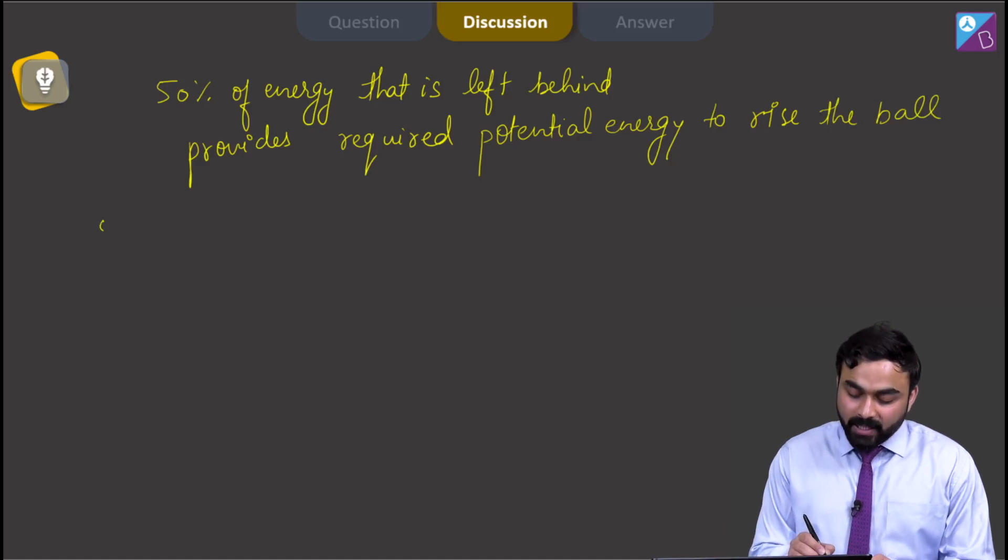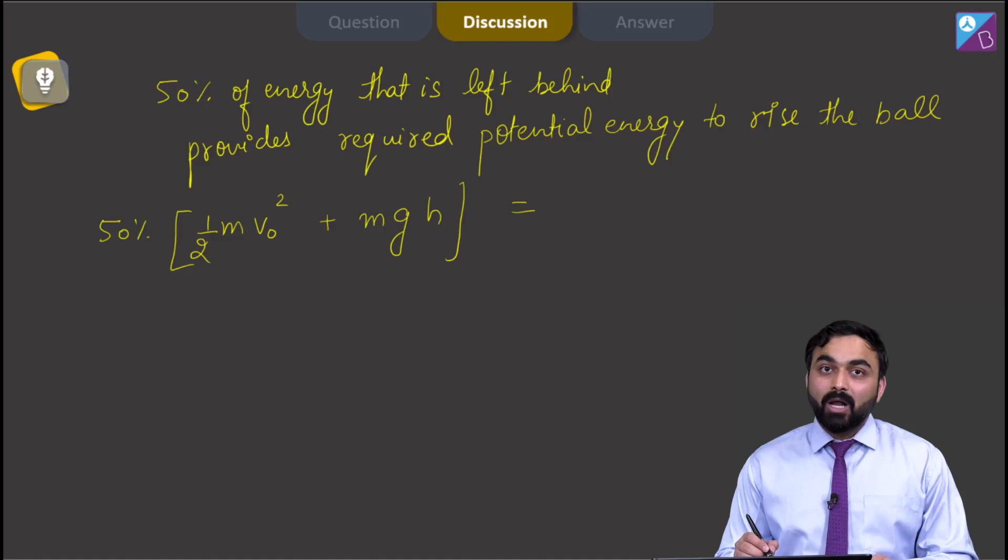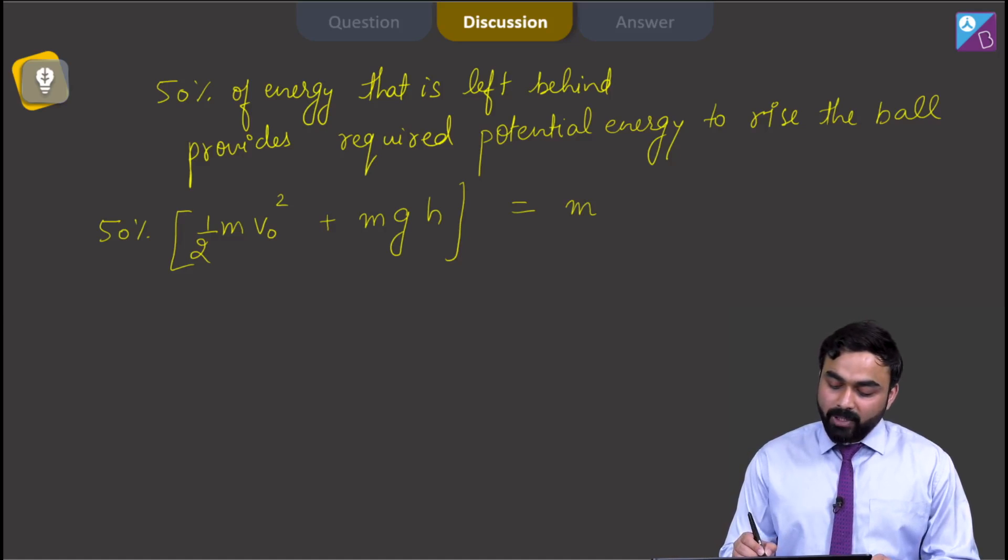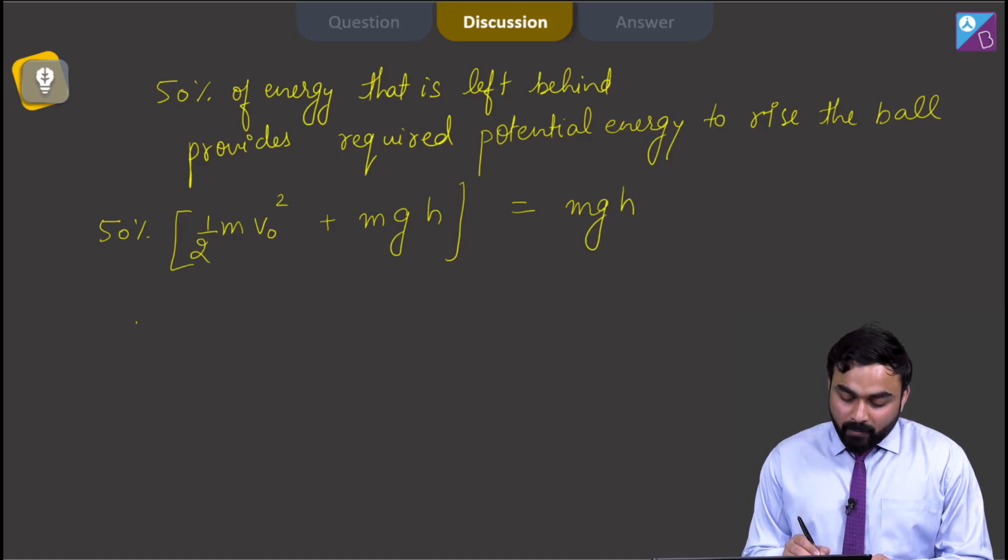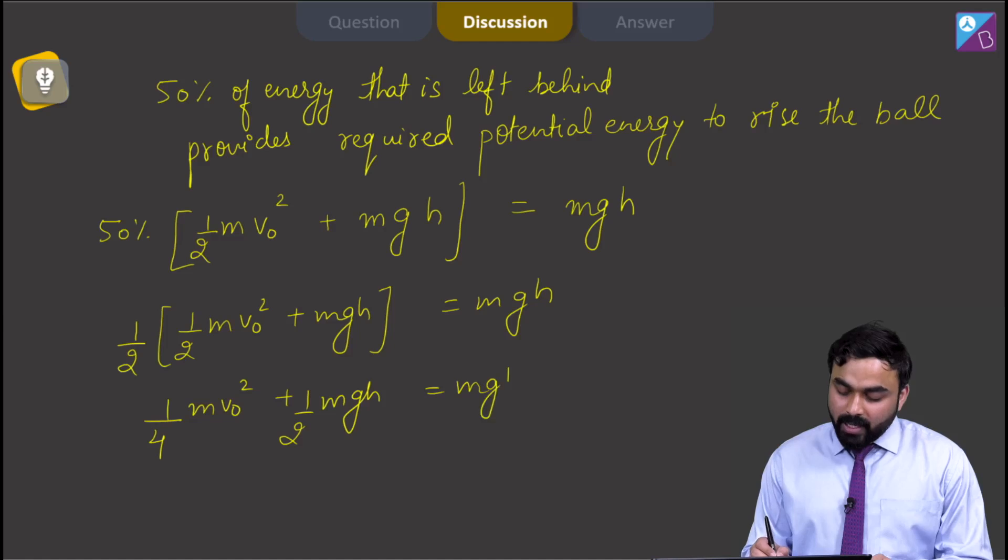So I can write it as 50% of energy, which is equal to half m v0 square plus mgh. So this will be 1 by 2 times of half m v0 square plus mgh equal to mgh, which will give me 1 by 4 m v0 square plus 1 by 2 mgh equal to mgh.